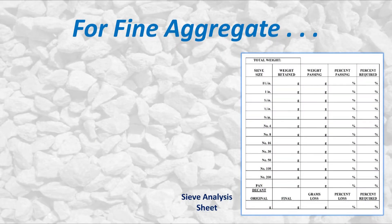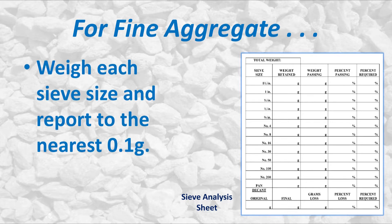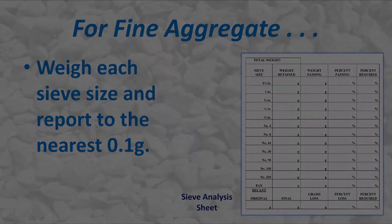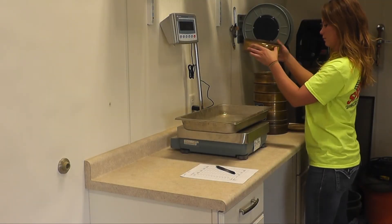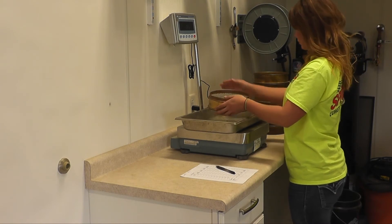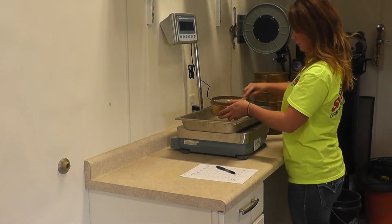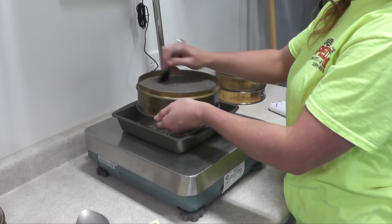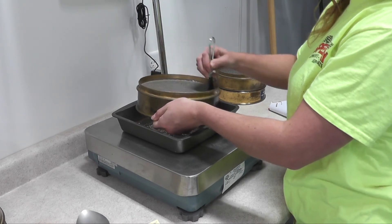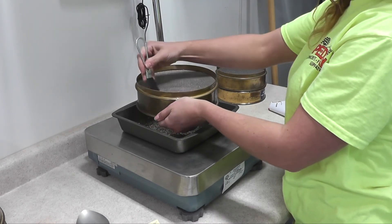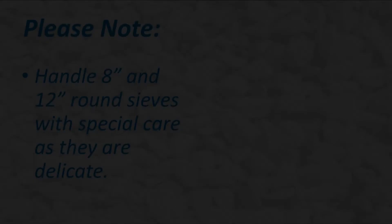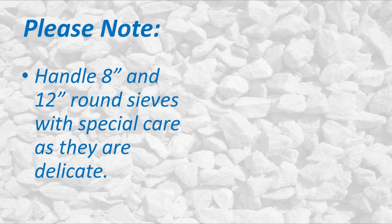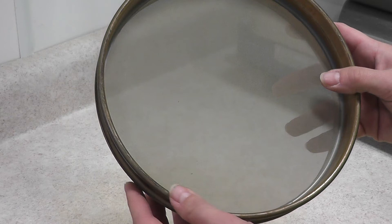For fine aggregates, weigh the material retained on each sieve size to the nearest 0.1 gram. Ensure that all material entrapped within the openings of the sieve is removed and included in the weight retained. This may be done using brushes to gently dislodge entrapped materials. The 8-inch or 12-inch round sieves need to be handled with special care due to the delicate nature of their screen sizes.